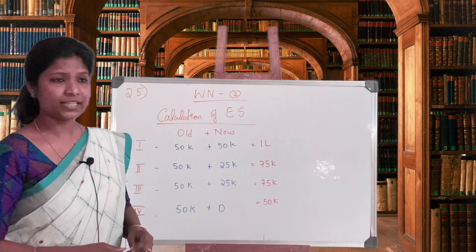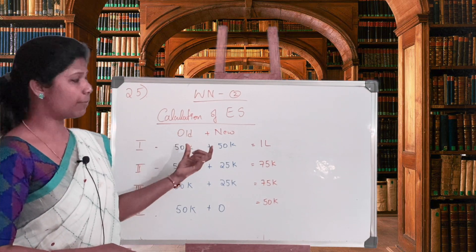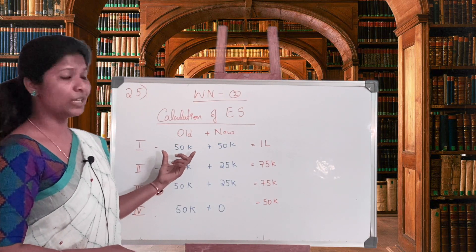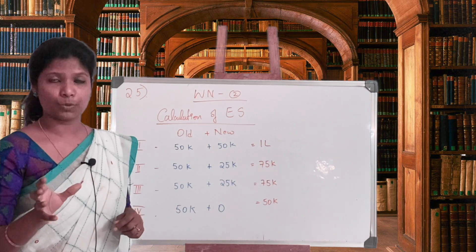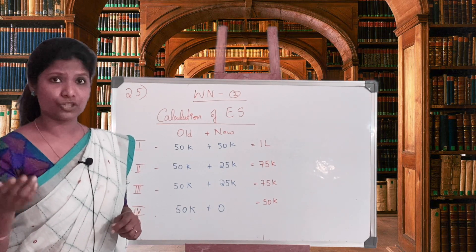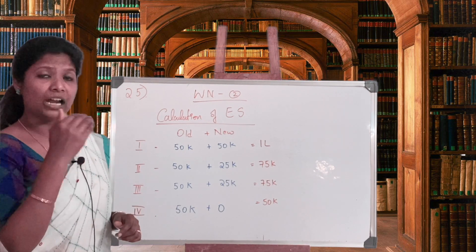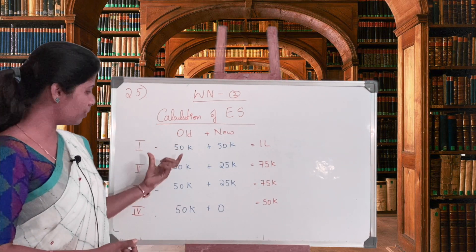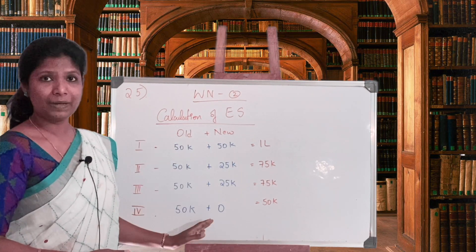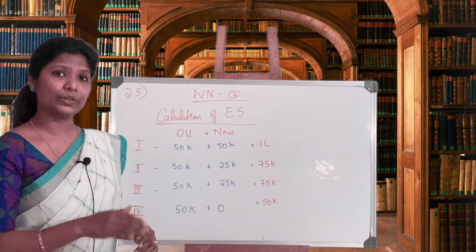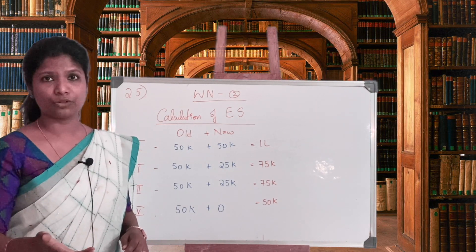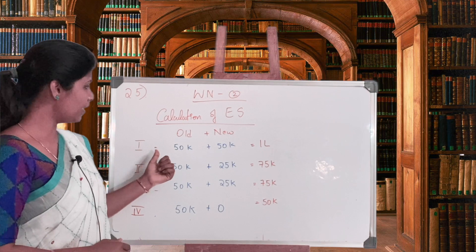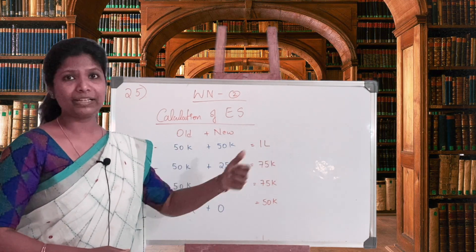The second working note is the calculation of equity shares. Under old (existing) capital combined with new capital: under plan one, old capital has 50,000 equity shares — as read from the first line of the question, 50,000 equity shares each of rupees 10. That 50,000 equity shares under existing capital remains common for all four plans. For plan one's new capital, we again raise 5 lakh through equity, giving another 50,000 equity shares.